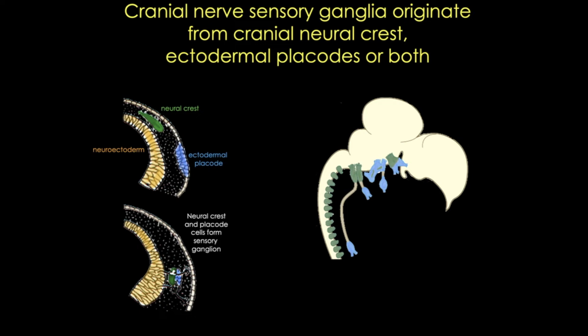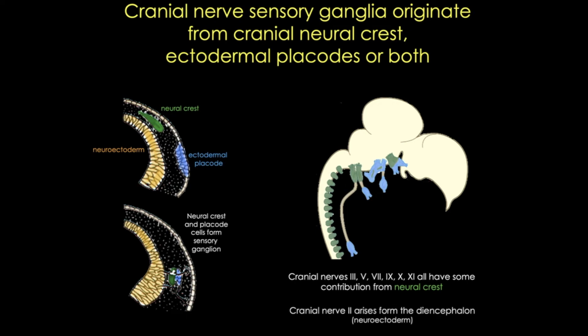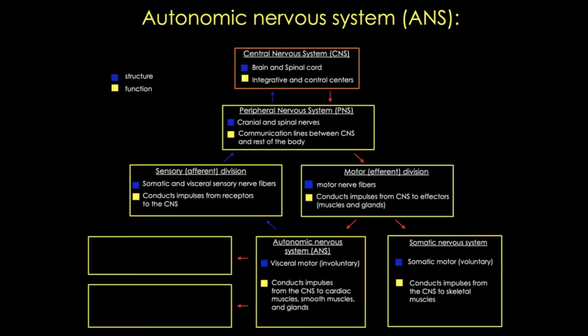You don't need to memorize what ganglia come from what tissue, but you do need to remember that the cranial nerves listed here all have some contribution from neural crest. Also remember that cranial nerves one — the olfactory nerve — and two — the optic nerve — actually arise from neural ectoderm. In the body region, neural crest cells contribute to the peripheral nervous system, both neurons and glia. They give rise to sensory ganglia, sympathetic and parasympathetic ganglia, and neural plexus within specific tissues and organs.